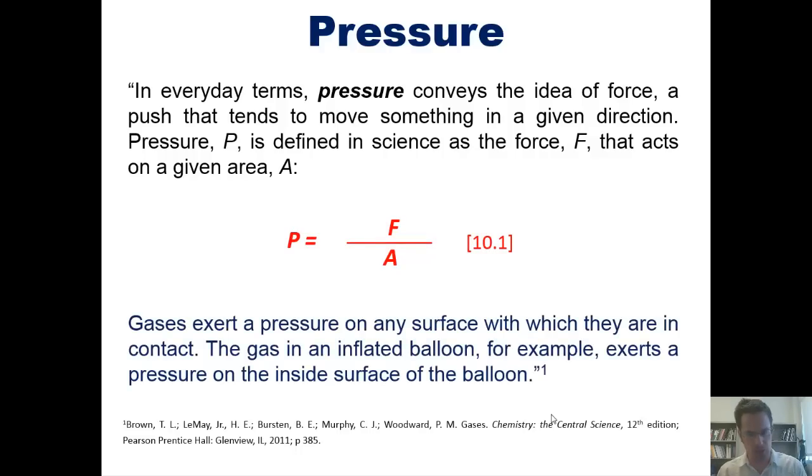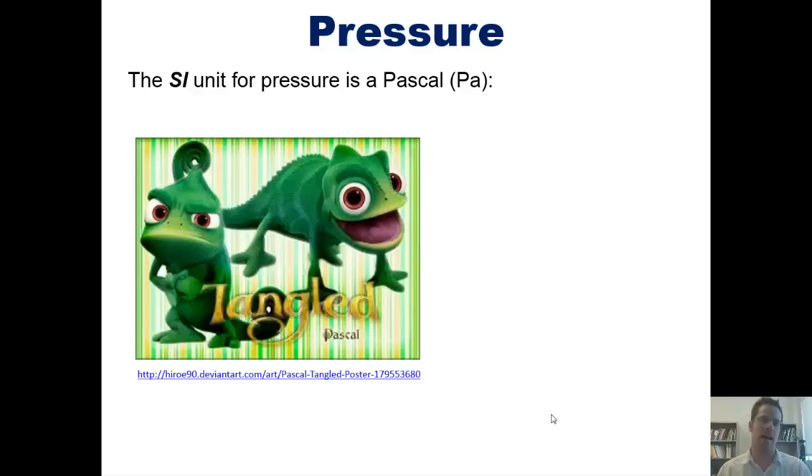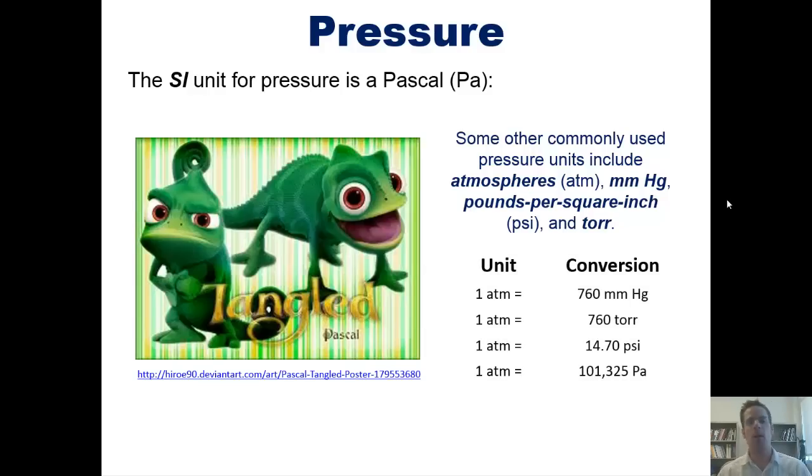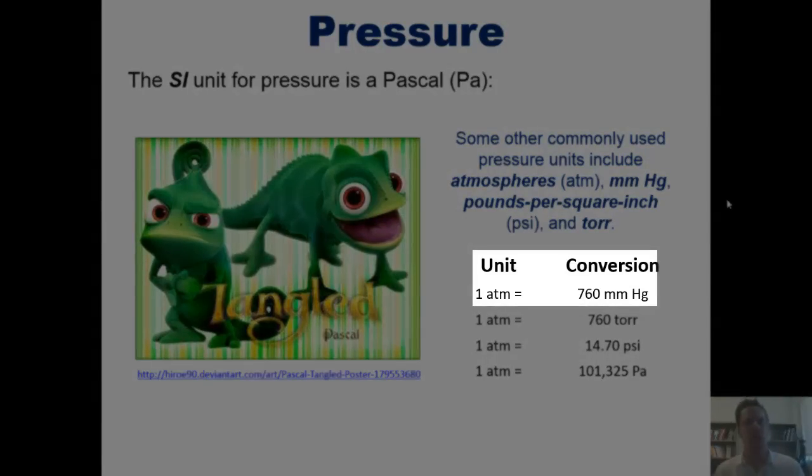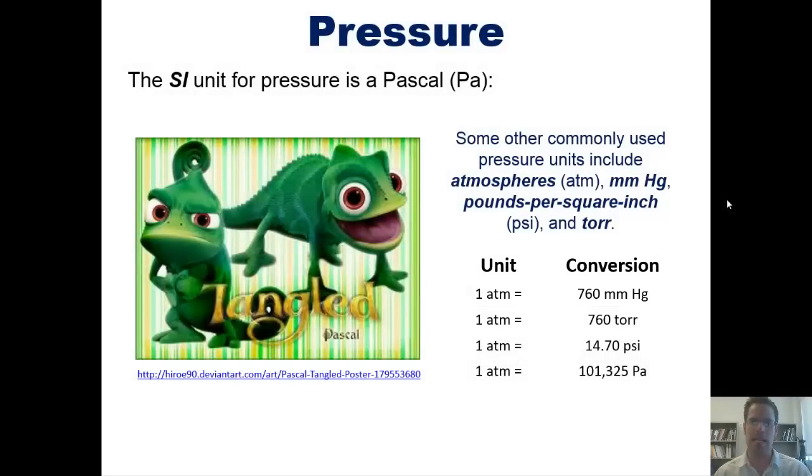Gases exert a pressure on any surface with which they are in contact. The gas in an inflated balloon, for example, exerts a pressure on the inside surface of the balloon. The SI unit for pressure is a Pascal. Some other commonly used pressure units include atmospheres, abbreviated atm, millimeters of mercury (Hg), pounds per square inch or psi, and torr. And here are the numerical interconversions between those units. I would like you, the students taking this class for me, to memorize that one atmosphere is 760 millimeters of mercury. I'll give you all of the rest of the conversions that you may need when you need them.